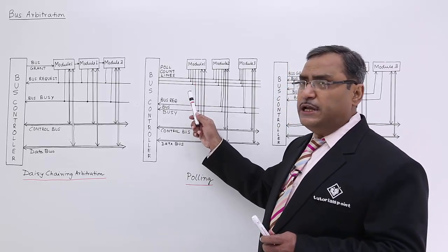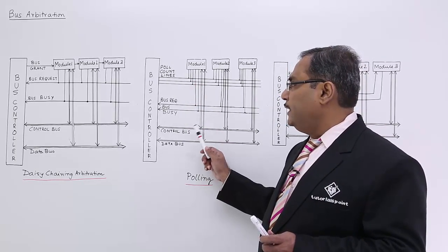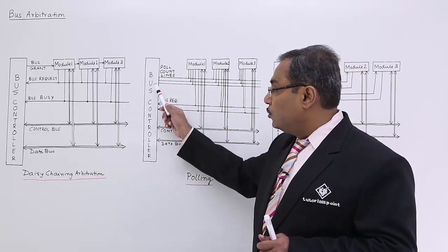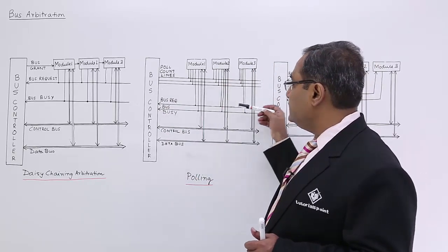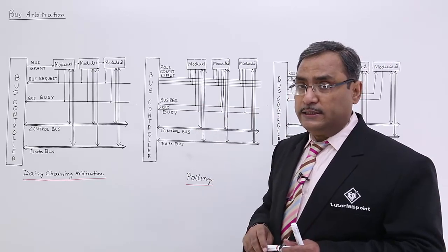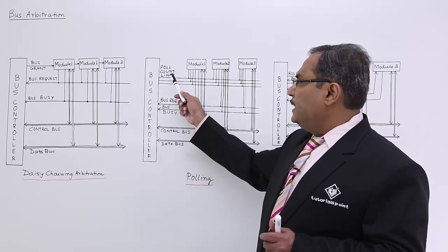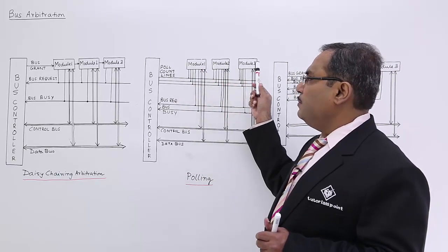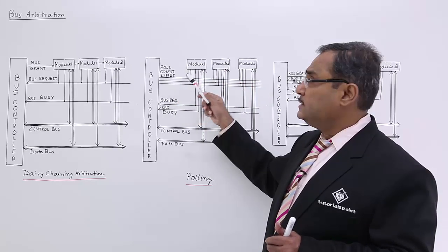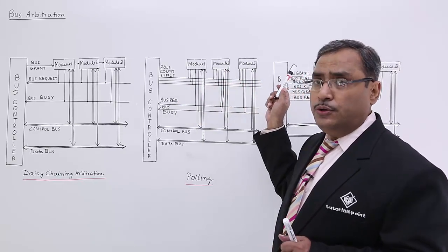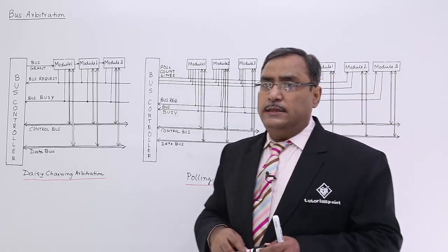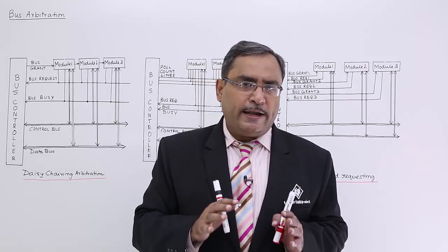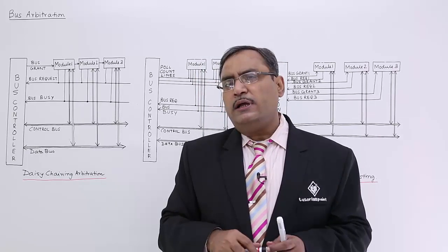However, the poll count lines may produce a sequence for a module that did not enable the bus request line — this is known as non-productive polling. Also, a limitation is that the bus controller still cannot identify which module enabled the single bus request line. Additionally, the number of bits in the poll count lines determines the maximum number of modules that can be attached to the system.